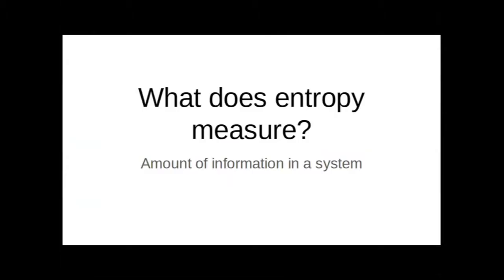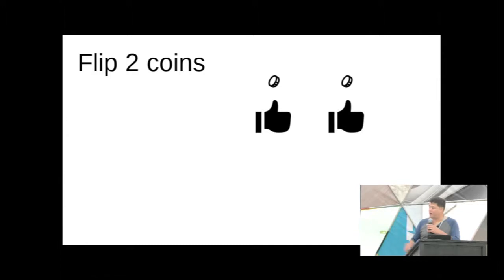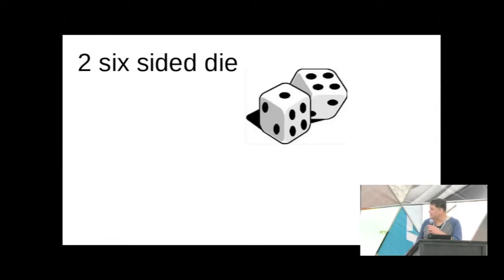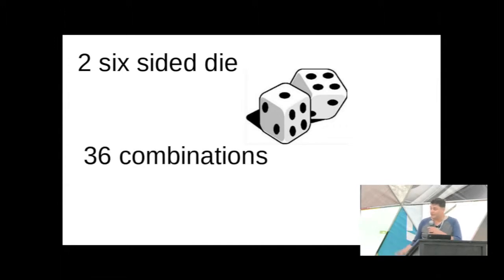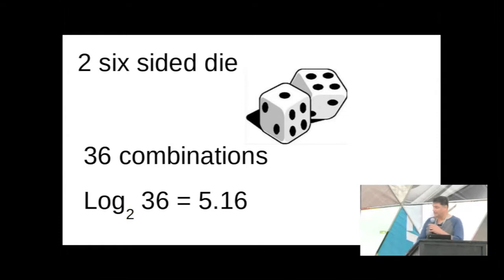Entropy is a measurement of the amount of information in a system. Entropy is measured as the log base two of however many bits you have. So it makes sense that if you flip two coins, you have four combinations, and the log base two of the number of combinations is your entropy. You flip two six-sided dice, you have 36 combinations. The log base two of 36 is a little over five.